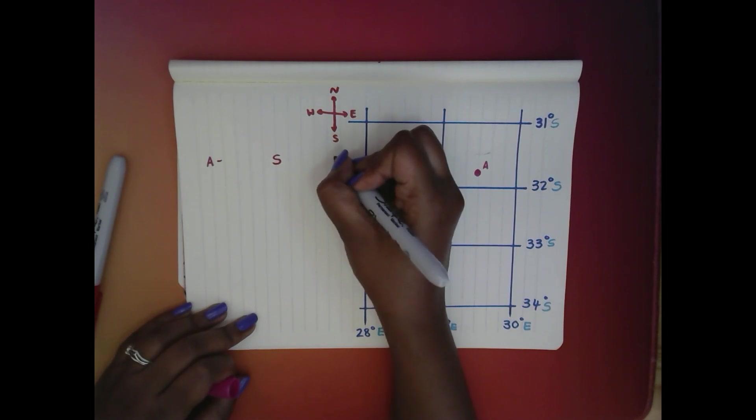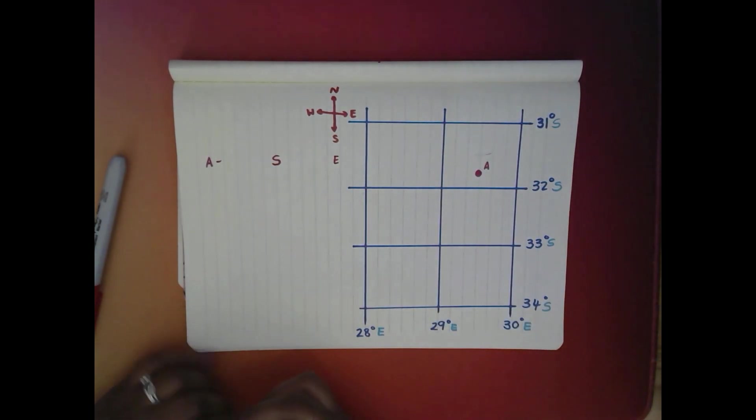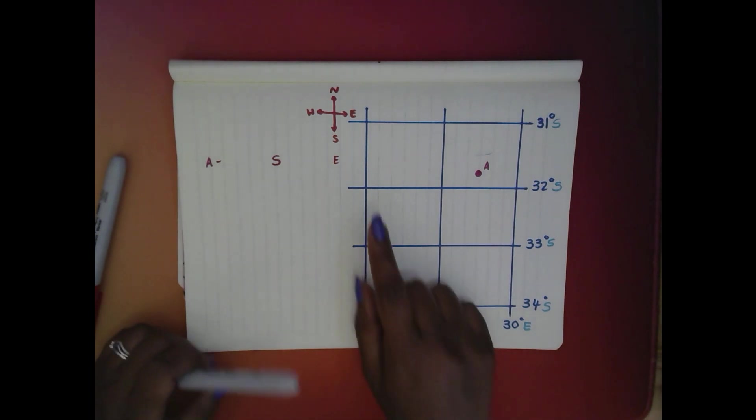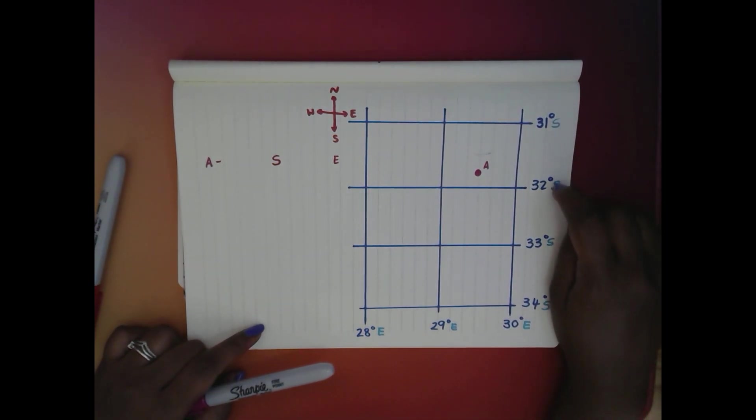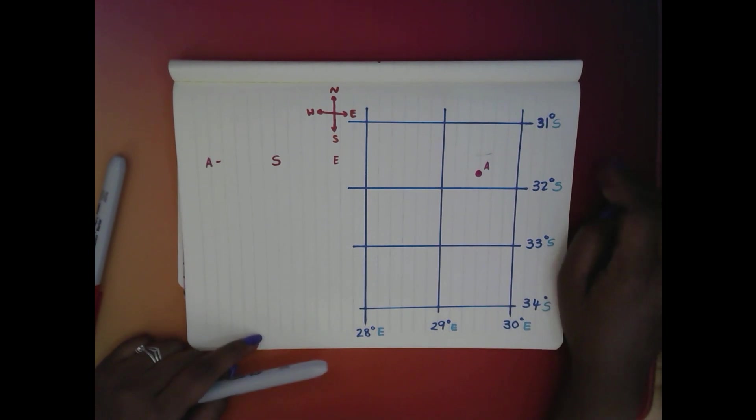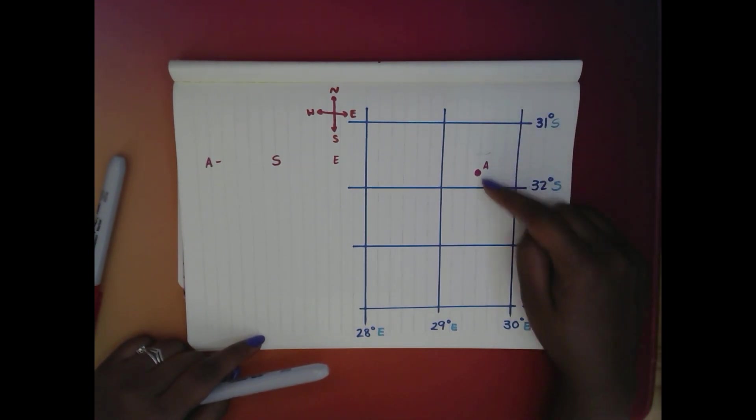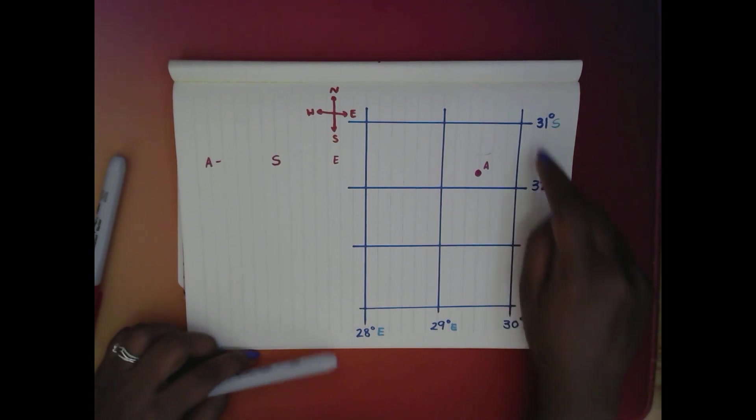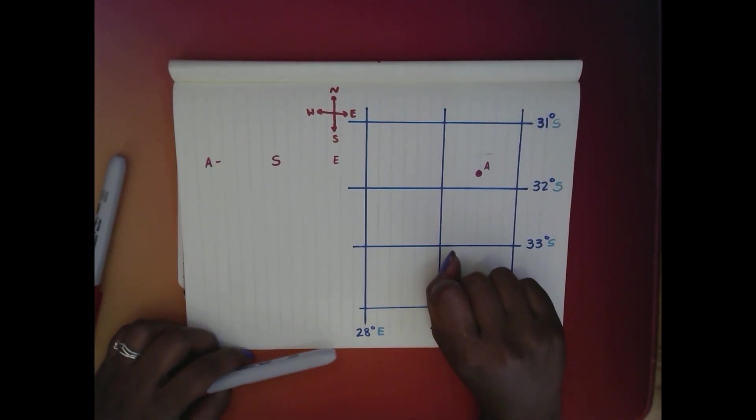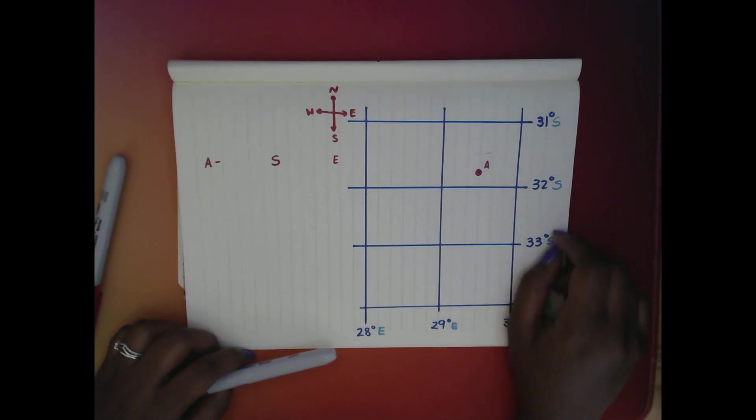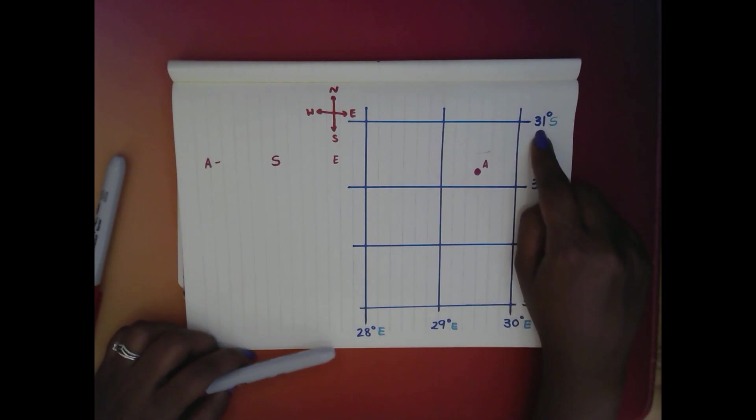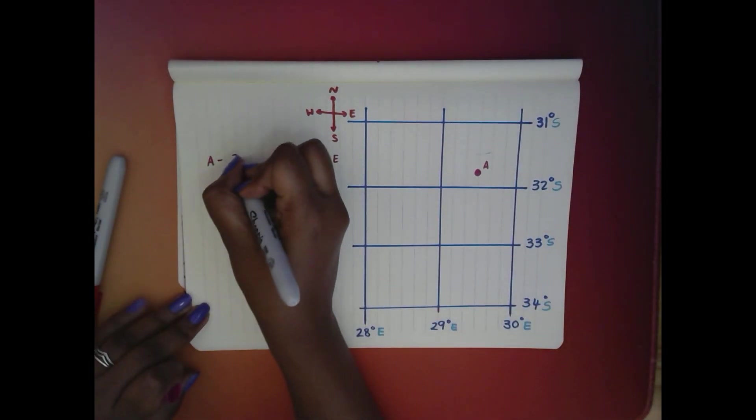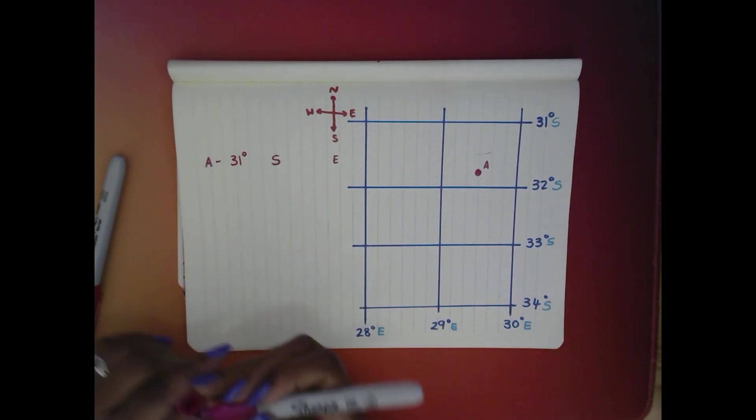All right, let's look at our latitude first because remember we always look at latitude first. So we're looking at our latitude lines - it's between 31 and 32. Now there's two ways that you can understand it. The first way you can understand it is that A has passed 31 but hasn't reached 32 yet, and so we would choose 31. But the cheater's way of doing it, and don't tell anyone that we're cheating, you always pick the smaller number. So it doesn't matter that A is closer to 32, we always pick the smaller number. So we're going to write down 31 degrees.